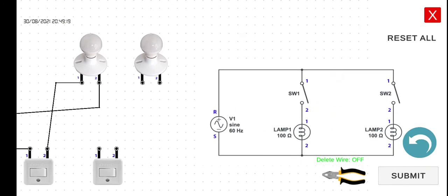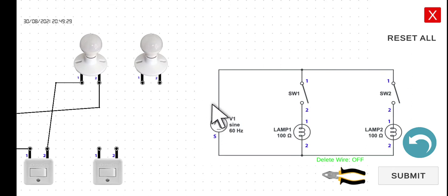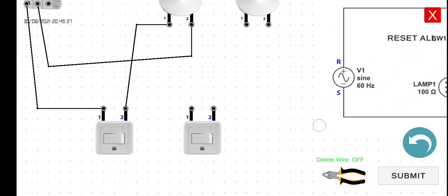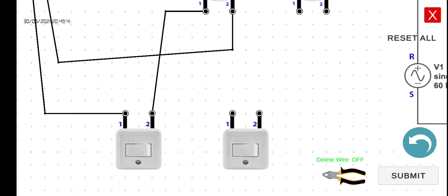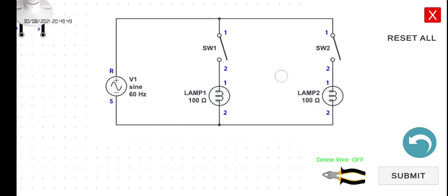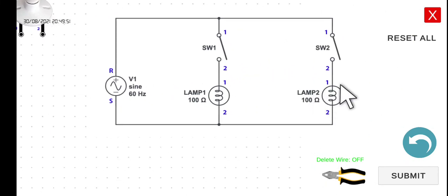Next, for switch two, we have two options here. We can connect it directly to the first terminal of switch one, or we can connect it directly to the R terminal of our circuit breaker. But in this particular case, I think it would be easier if we connect it to the first terminal of switch one. So next is switch two — the second terminal of switch two will be connected to the first terminal of lamp two.